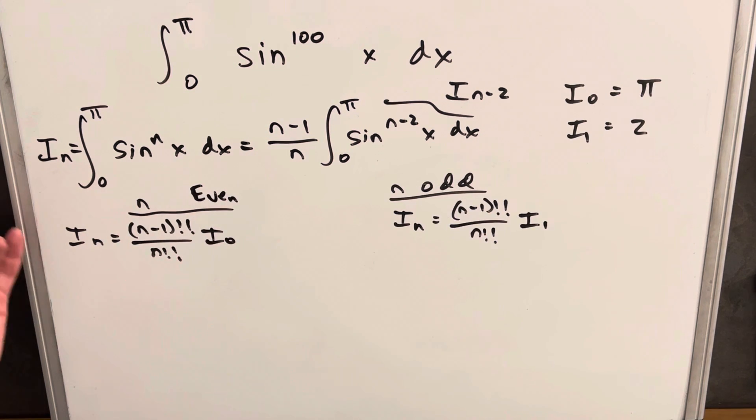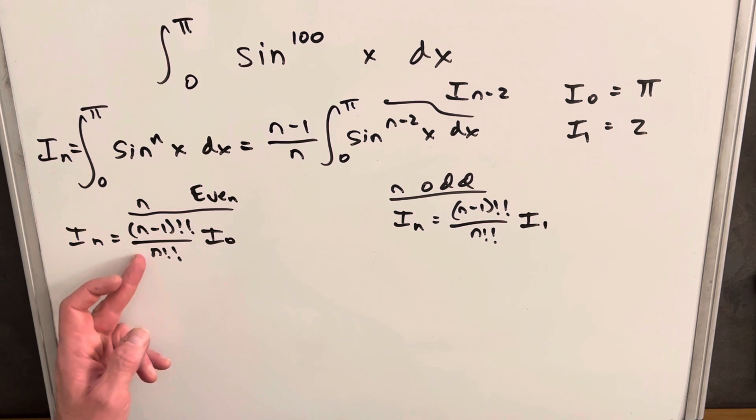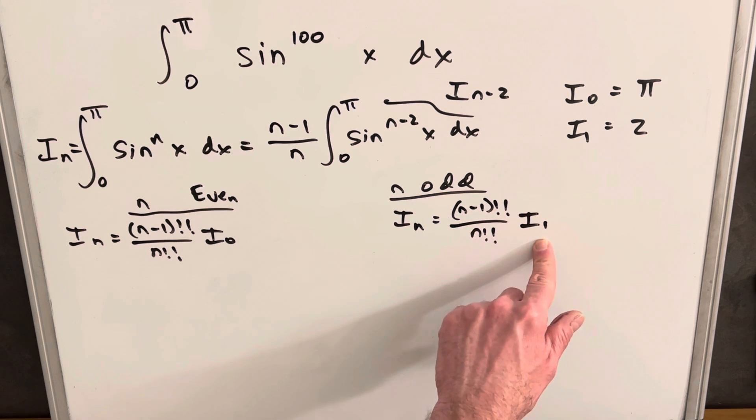So after all that, what have we done? We have some kind of formula now for these integrals of sine and cosine with large power. But we separate it in two cases. So when it's even, we have this n minus 1 double factorial over n double factorial times i sub 0. For odd, we have n minus 1. Same thing for the coefficient, n minus 1 double factorial, n double factorial, i sub 1.